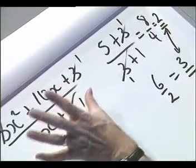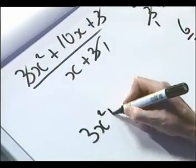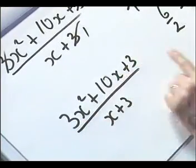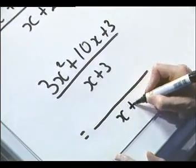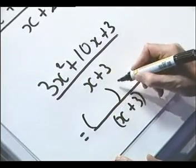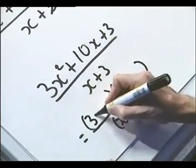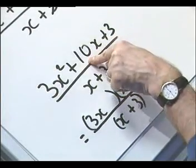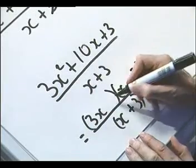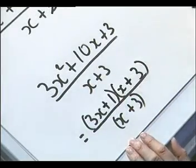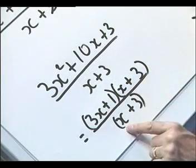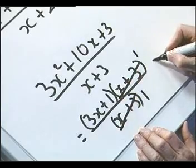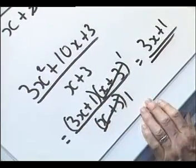Instead, factorise the numerator. For 3x squared plus 10x plus 3 over (x plus 3): we need a 3x and an x, with a 3 and a 1 to give the constant, arranged so that 3x times 3 gives 9x and x times 1 gives x — totalling 10x. That factorises as (3x plus 1)(x plus 3). The common factor is x plus 3; dividing top and bottom gives 3x plus 1, which is the correct answer.